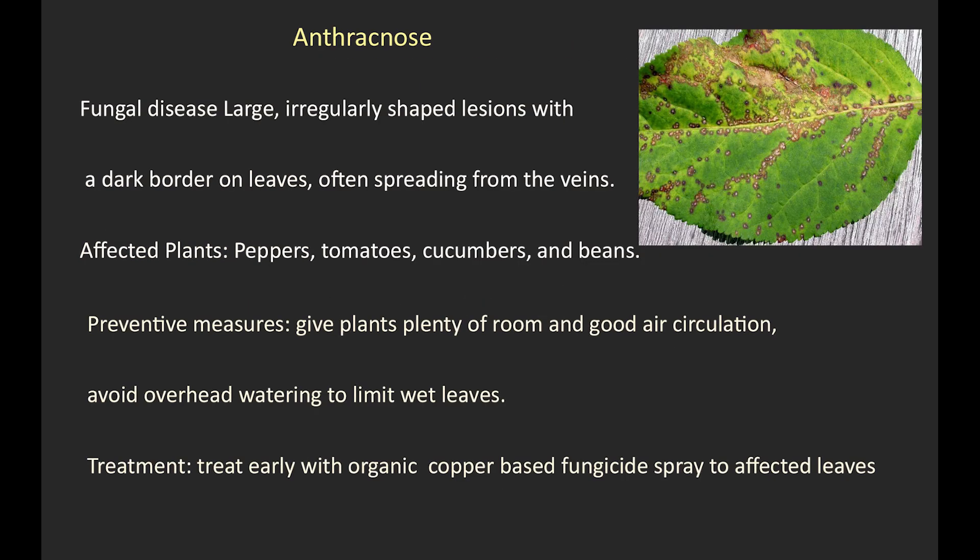9. Anthracnose. Symptoms: fungal disease with large, irregularly shaped lesions with a dark border on leaves, often spreading from the veins. Affected plants: peppers, tomatoes, cucumbers, and beans. Preventive measures: give plants plenty of room and good air circulation. Avoid overhead watering to limit wet leaves. Treatment: treat early with organic copper-based fungicide spray applied to affected leaves.